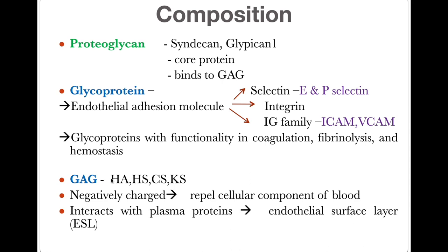The third component is glycoprotein, which forms the endothelial cell adhesion molecules. These adhesion molecules belong to three families: selectin, integrin and the immunoglobulin family. E-selectin and P-selectin are involved in leukocyte and endothelial cell interactions. Integrin binds to the extracellular matrix and is responsible for interaction with laminin, fibronectin and collagen. In the immunoglobulin family, there are ICAM, VCAM and PE-CAM.